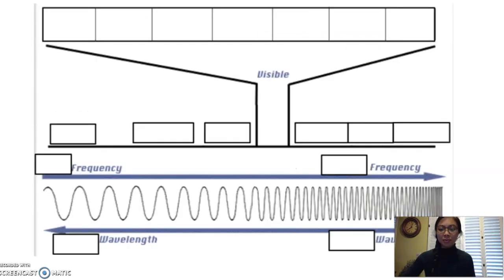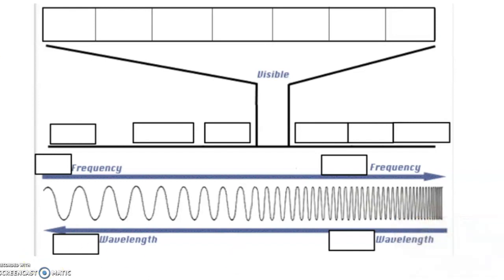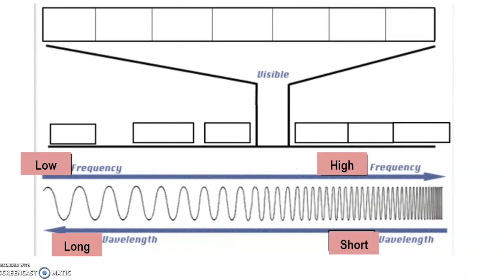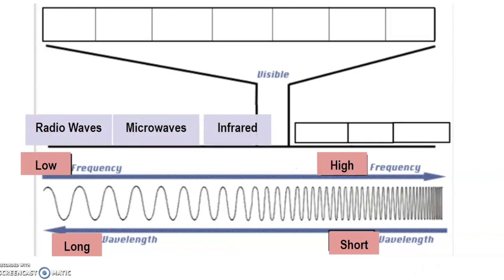Let's review the relationship between frequency and wavelength. Low frequencies are related to longer wavelengths — a helpful memory trick is that 'low' goes with 'long,' since both start with 'lo.' On the other hand, high frequencies are related to shorter wavelengths; the more cycles per second, the shorter the wavelength. From the longest wavelength and lowest frequency to the shortest, we have radio waves, microwaves, and infrared waves — all with long wavelengths and low frequencies.